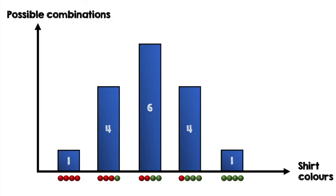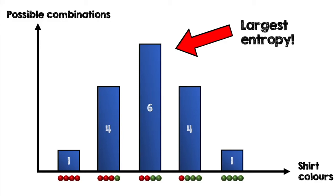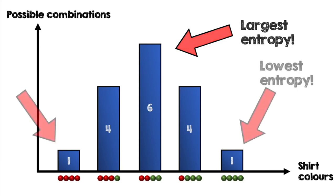We can visualise the number of possibilities on a chart. The case with the largest number of possibilities is when two clones wear red and two wear green. Therefore, this is the case with the largest entropy, and the lowest entropy cases are those where the clones wear the same colour.